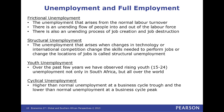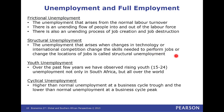Frictional unemployment — think of friction as normal. This is your normal unemployment: people go into jobs, they're unhappy, they leave and want to explore something new, then go into another job. Structural unemployment — think of structure as purposeful change. Something happened that caused unemployment, such as technology change, where new skills are required and jobs are replaced by computers.